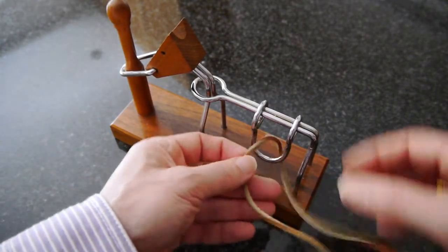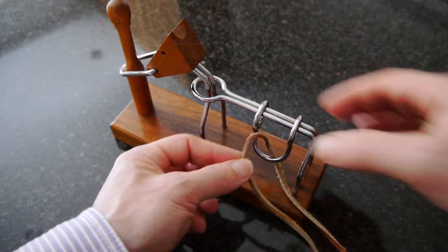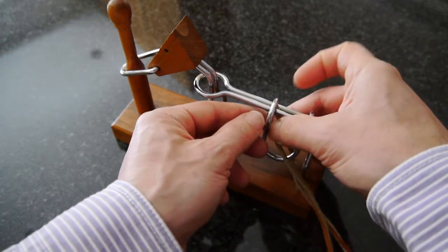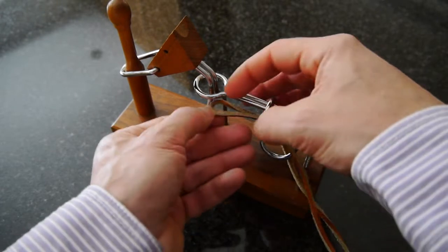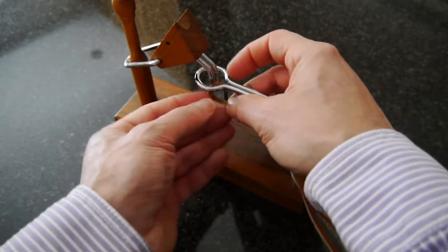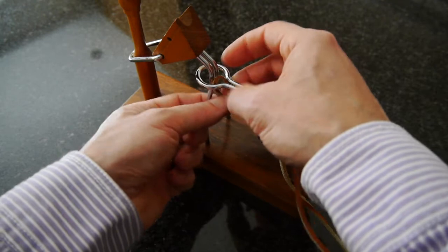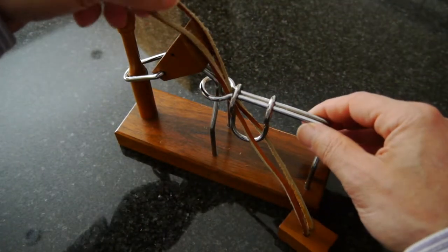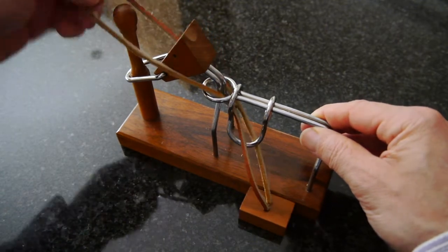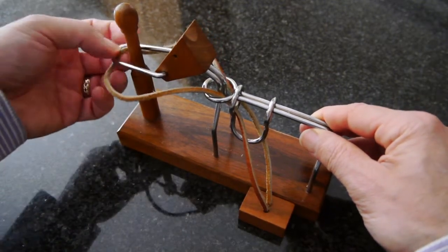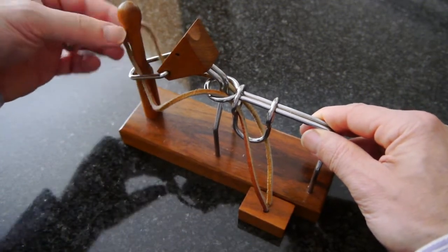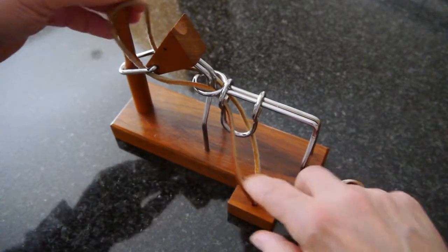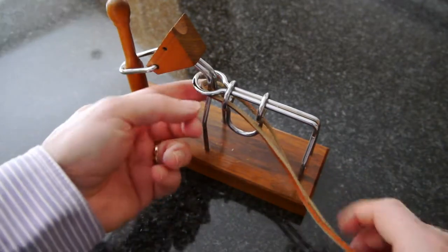So the first thing that you do is take the loop through the saddle, over the shoulders of the horse—hopefully you can see this—over the head and the post and the reins, feed it through the reins and then pull it back and back again.